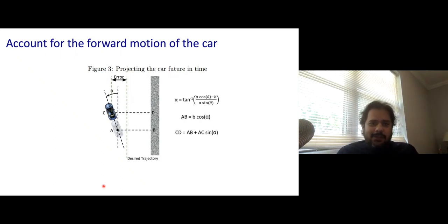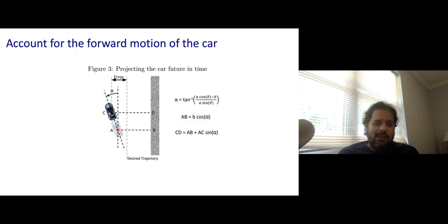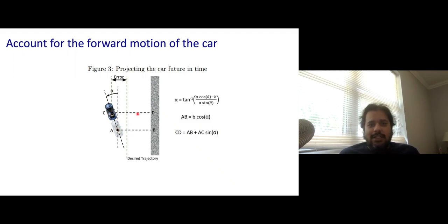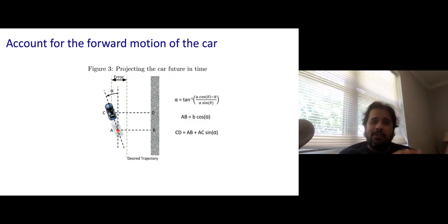To recap what wall following looks like: at any given time, let's say your car is at point A, so your instantaneous distance to the wall is AB. But you are not trying to compute the error between AB and the desired trajectory. What you do is project the car forward by a certain distance — or based on velocity if you are doing dynamic velocities — and what you are interested in is minimizing the future distance CD, which is the projection of your car into time.